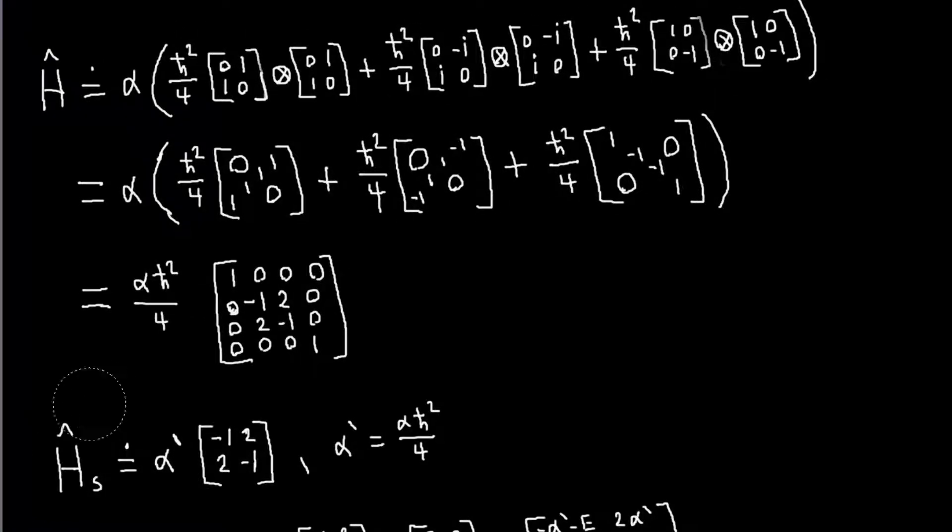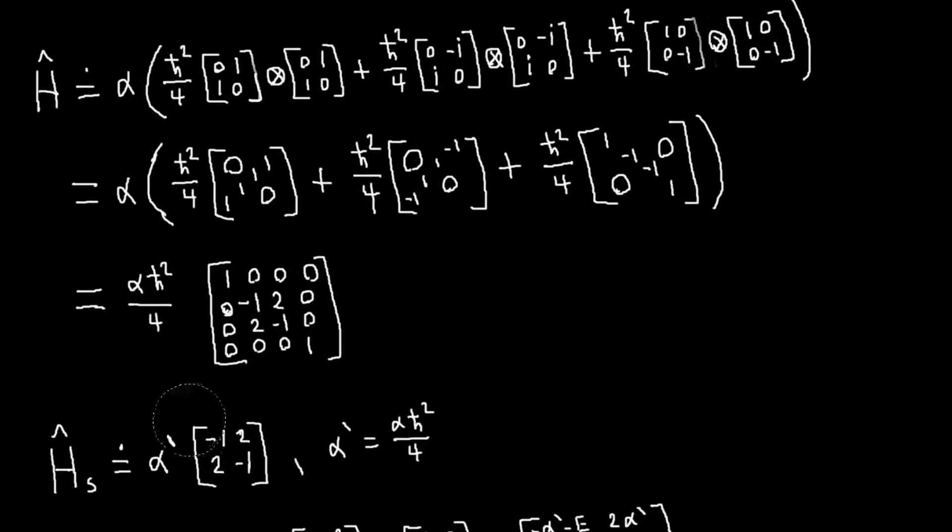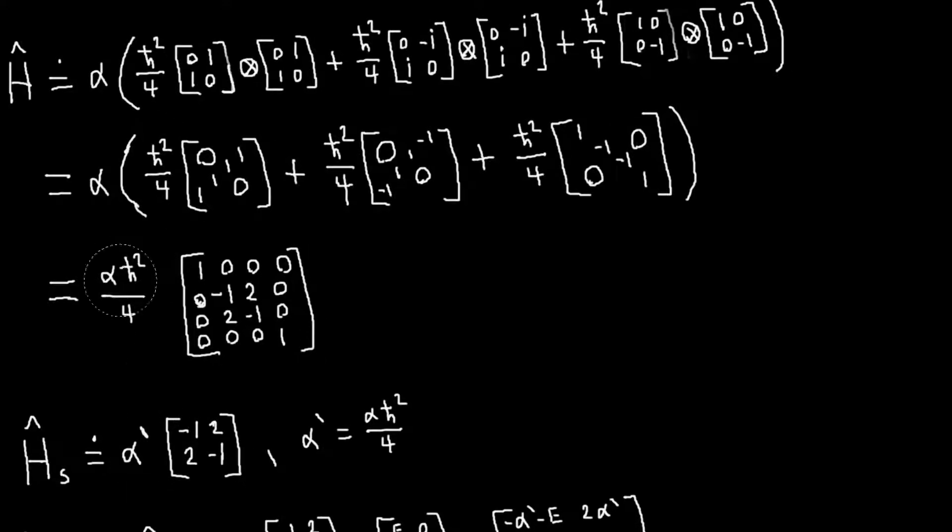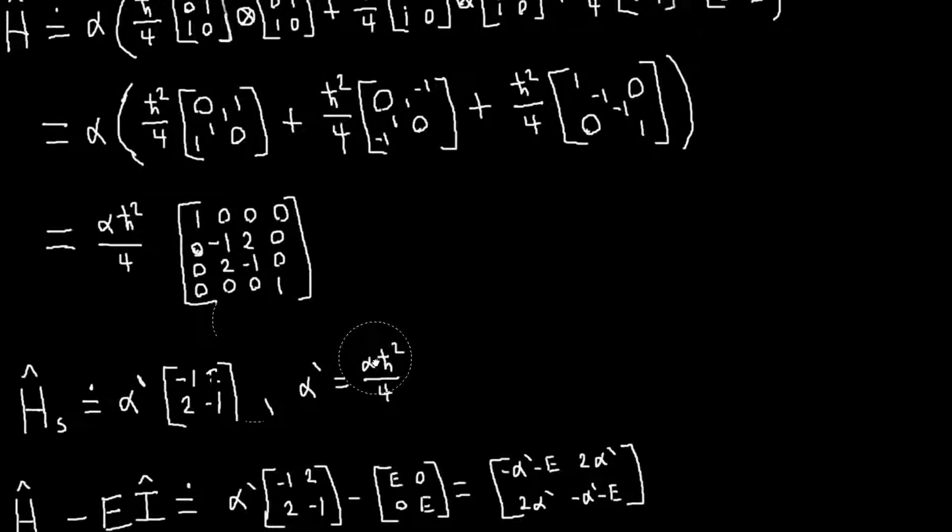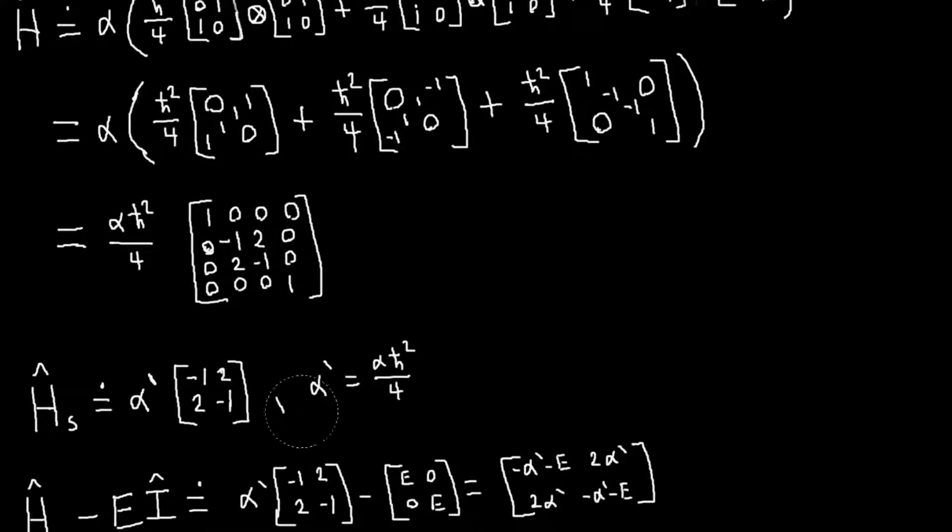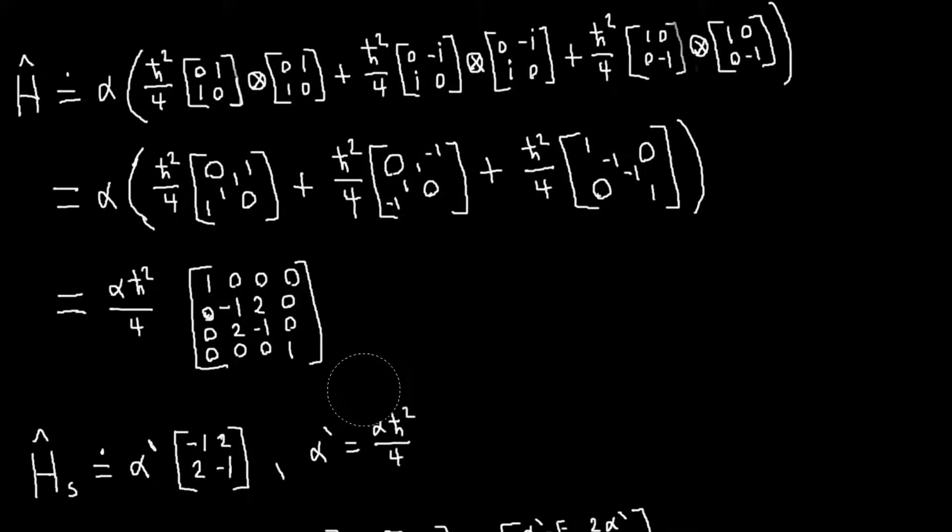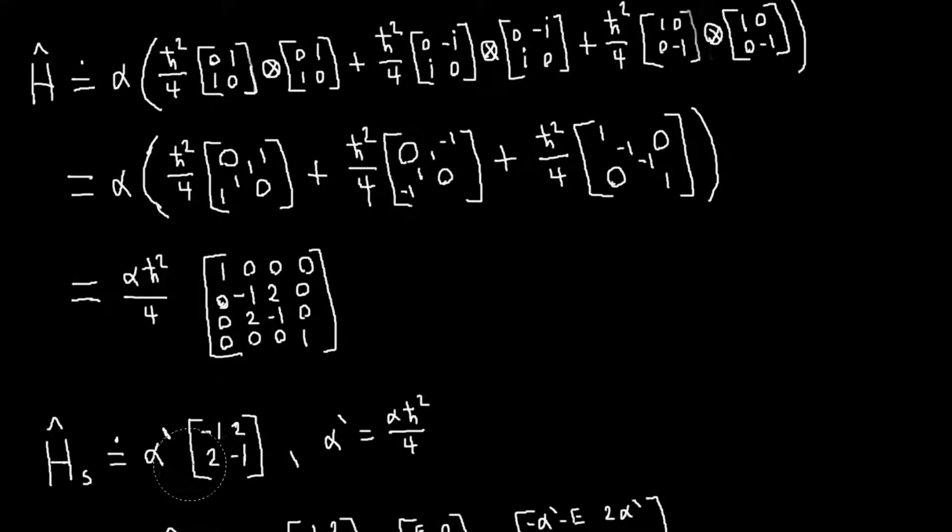So we work with this, I'm calling it hs, or I guess Hamiltonian s is for subset of the total Hamiltonian, which is just this middle part. And I'm just going to write all of this alpha h-bar squared over four, I'm going to call it alpha prime, so I don't have to keep writing it everywhere.